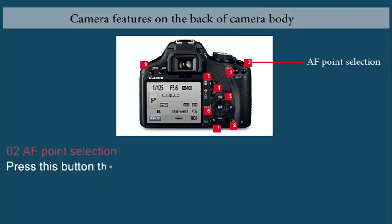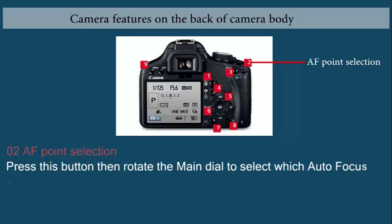Auto focus point selection: Press this button then rotate the main dial to select which auto focus point the camera will use.